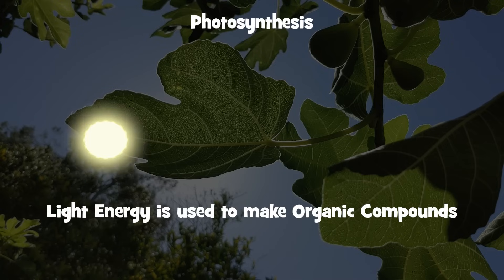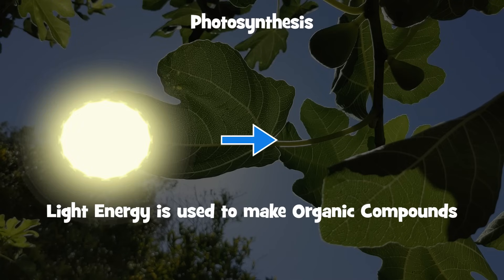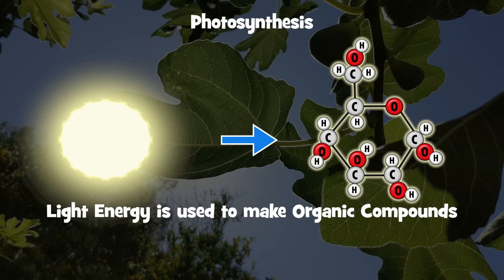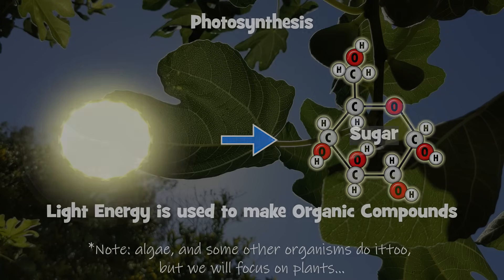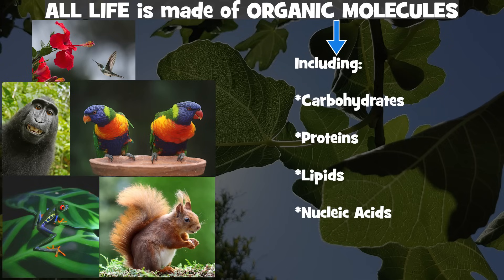In photosynthesis, light is used to make organic compounds, especially sugars, in plants. This is extremely important for virtually all life on Earth, because these organic compounds are what we, and our food, are all made of.